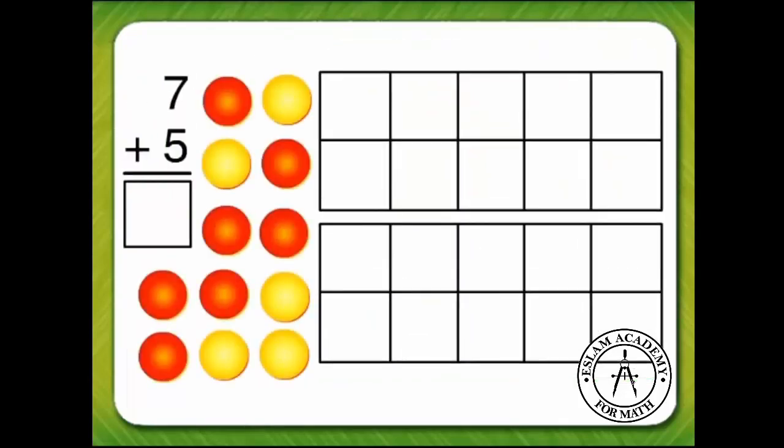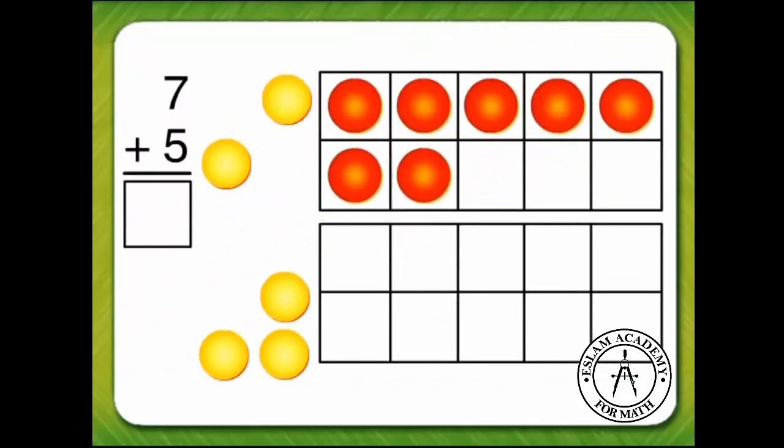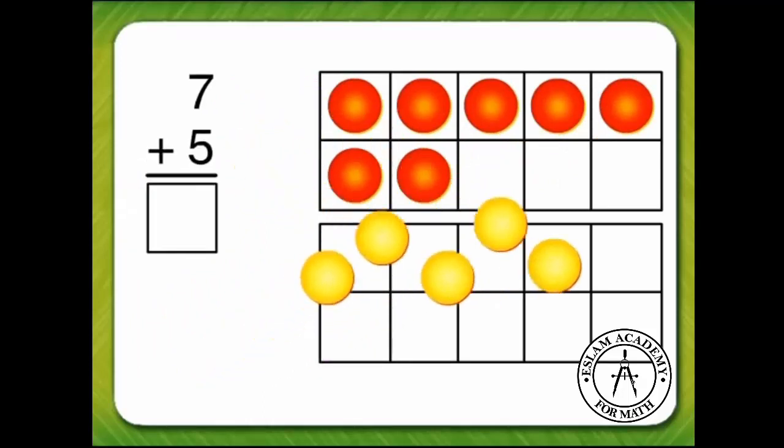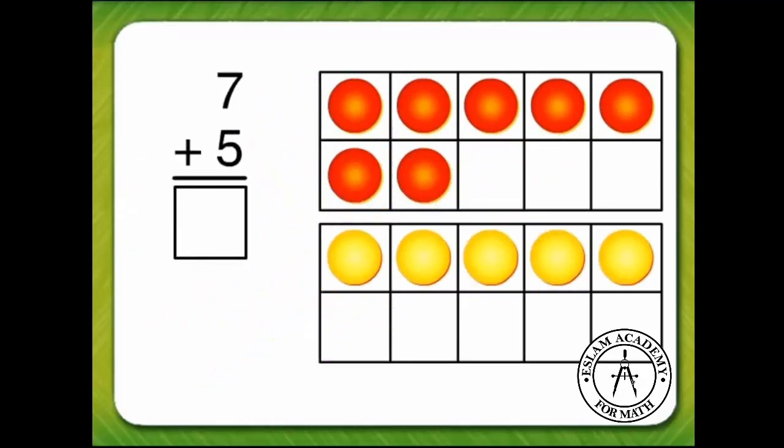Let's use our counters and 10 frame to add 7 plus 5. We can put 7 red counters on the top 10 frame and 5 yellow counters on the bottom 10 frame to find the sum.